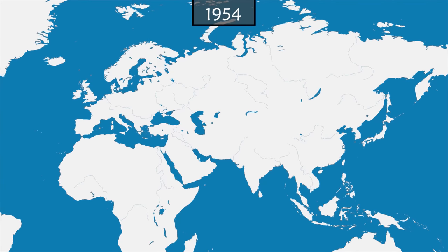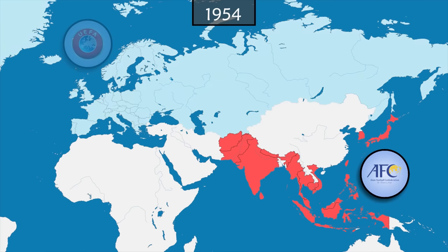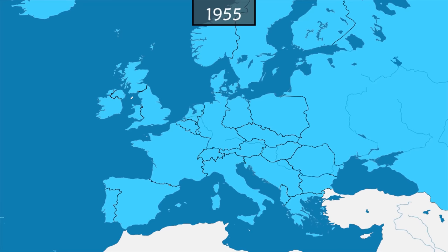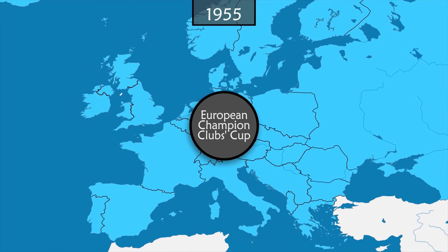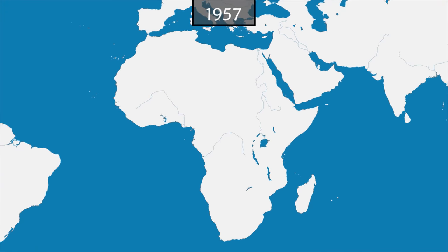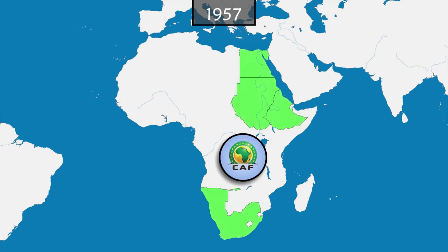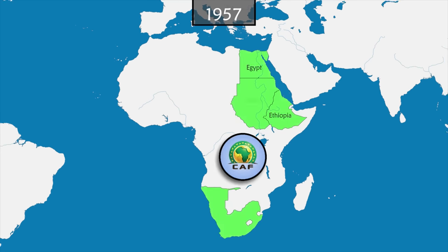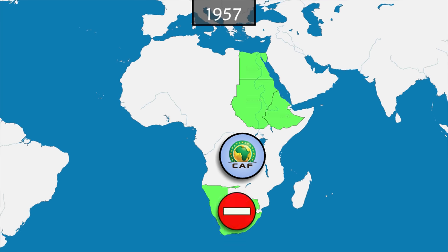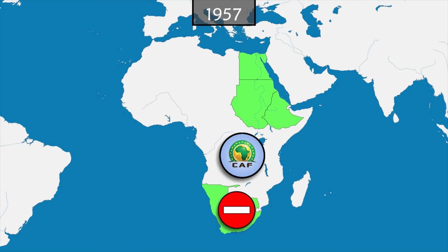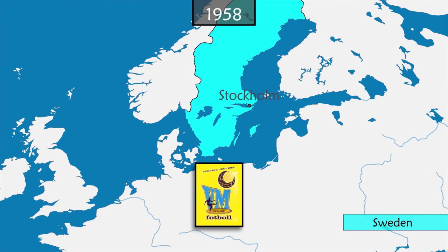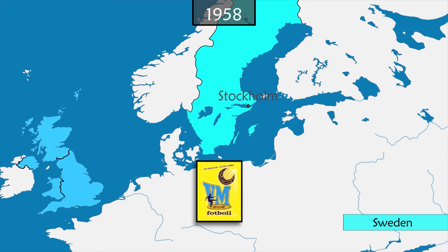In 1954, the Asian Football Confederation and the Union of European Football Associations (UEFA) are founded. The following year, the first European Champion Club's Cup is organized — the predecessor of the prestigious Champions League. Finally, in 1957, in the context of decolonization, the Confederation of African Football is founded by Egypt, Ethiopia, Sudan, and South Africa. However, South Africa is disqualified from the first African Cup because the country practices apartheid and does not have a multi-racial team.